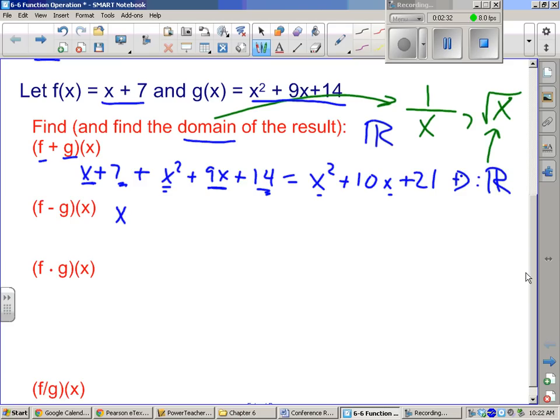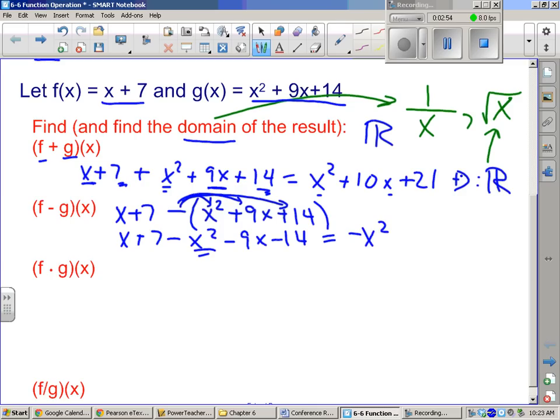Alright. f minus g. So same process. x plus 7 minus. Now be careful here using parentheses to remind myself I have to distribute that like a negative 1 to all three of these. So it's x plus 7 minus x squared minus 9x minus 14. So x squared comes first. Then I have x minus 9x is minus 8x. And then I have 7 minus 14 is minus 7.